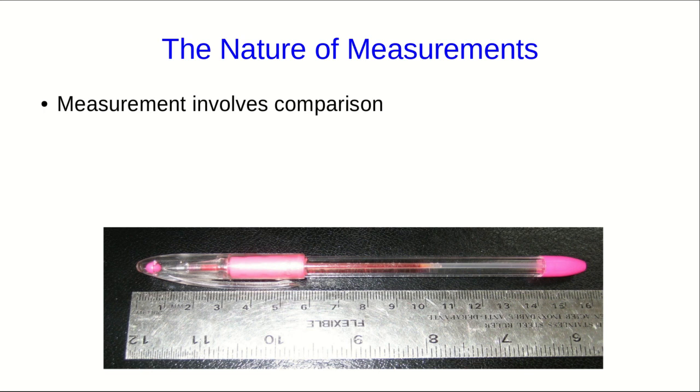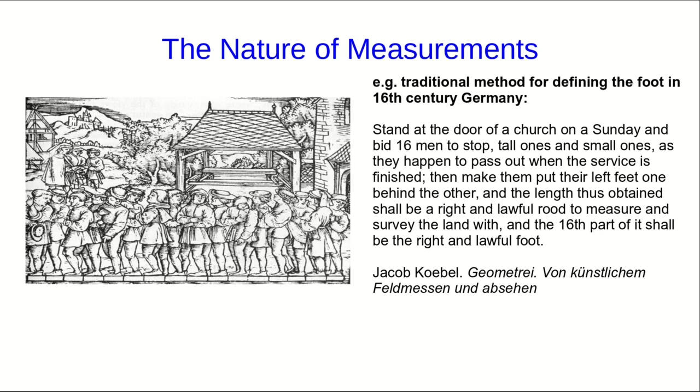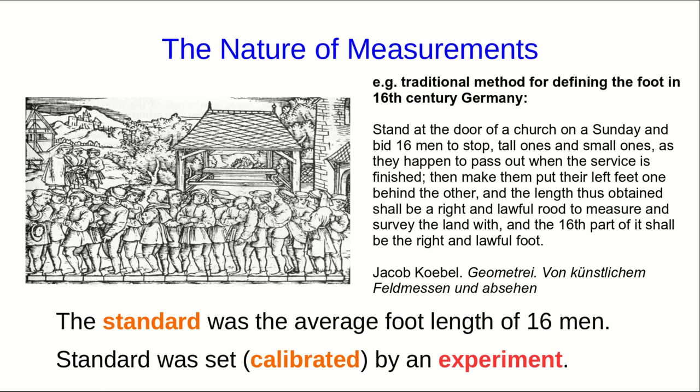All measurements involve comparisons, such as comparing this pen with the markings on the ruler to come up with that the pen is 16 centimeters long. The scale on the ruler is a standard, but for this to work, somebody had to decide how long a centimeter was. This is called calibration, and it's always done using some sort of experiment. Here's an old example of a calibration method. Pause the video for a moment and read it. The important thing to notice is that it establishes a standard way of arriving at the length of a foot, and it describes an experiment that's used for calibrating it.